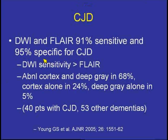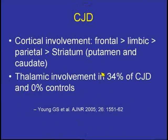The sensitivity of diffusion-weighted imaging has been reported as being more sensitive than FLAIR scans. This is a patient population where you want to make sure you are doing DWI scanning with ADC mapping, because it is true cytotoxic edema and restriction of ADC as opposed to just T2 shine-through. High signal intensity in the cortex occurs at a very high rate; deep gray matter alone in only 5%. Cortical involvement may be throughout the brain or limited to frontal, limbic, or parietal regions, with thalamic involvement in only 34% of non-sporadic CJD.